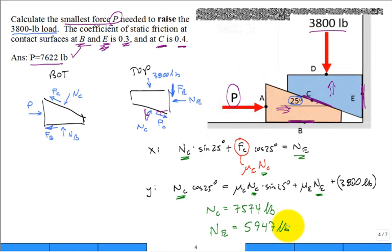Now you can go to the bottom block. Sum of the forces in the x equal to zero: P is pushing it over, and then we'll have μ_B times N_B pushing back due to the bottom surface, and then we'll have μ_C times the N_C, the friction at the top, and then we're going to pick off the cosine of 25 degrees, and then we have plus N_C times the sine of 25 degrees.